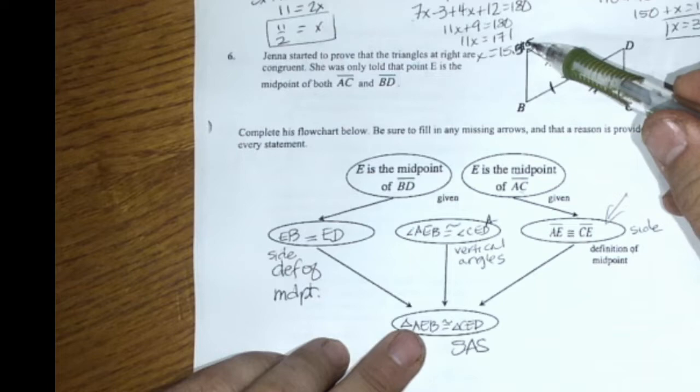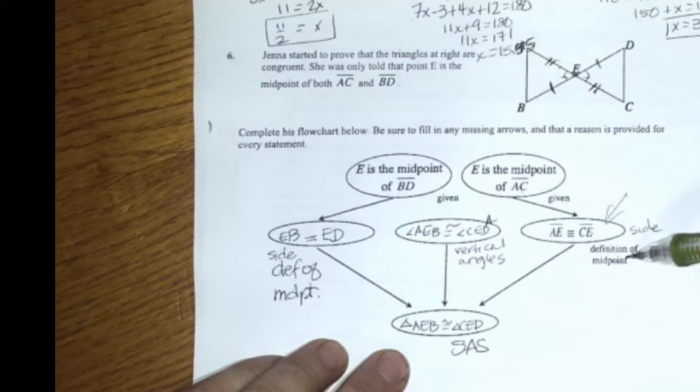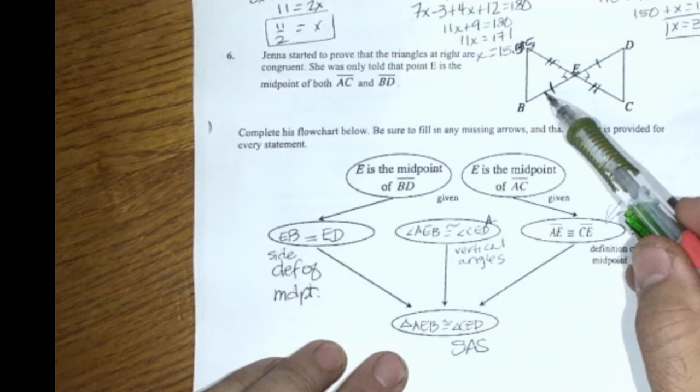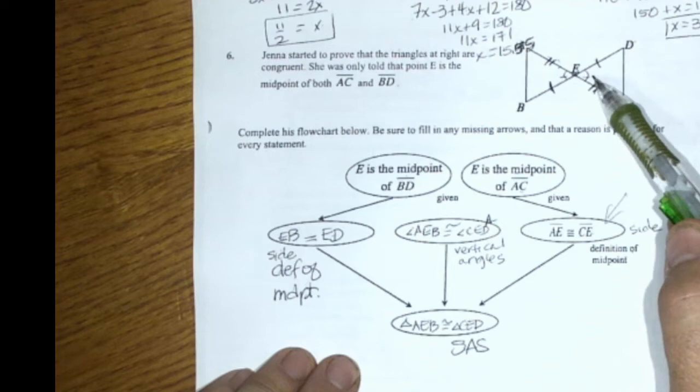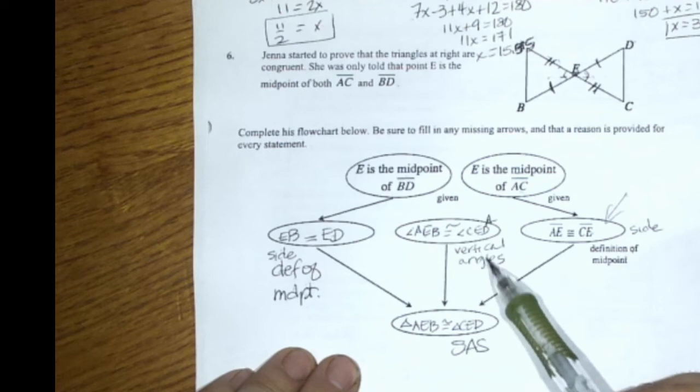Says that A-E and C-E are the same. They're congruent. And the reason why is the definition of midpoint. Midpoint over here tells me that B-E, or E-B in this case, and E-D are the same by the definition of midpoint. So I can say that this angle and this angle are equal because they're vertical angles. So here's me saying that and saying that it's vertical angles.